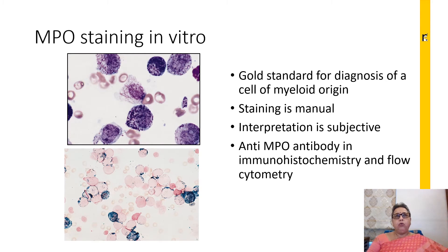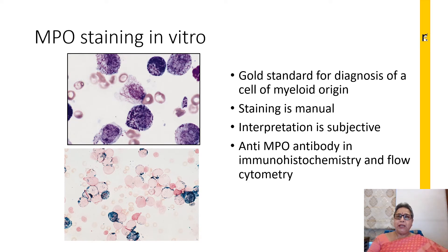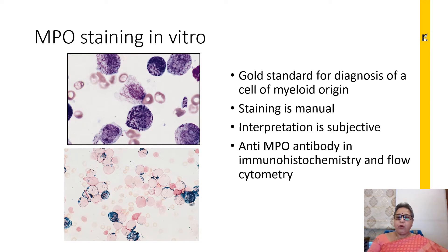To correctly identify a cell of myeloid origin, we used a myeloperoxidase stain — this started long ago ever since we differentiated myeloids from non-myeloids. The myeloperoxidase stain used in vitro was time consuming, cumbersome, and the interpretation was subjective. But if a cell was myeloperoxidase positive it was definitely of myeloid origin, and myeloperoxidase negative meant non-myeloid. Even today we use an anti-MPO antibody in immunohistochemistry and flow cytometry.